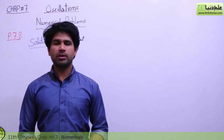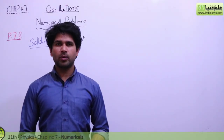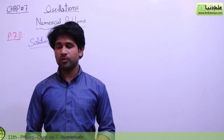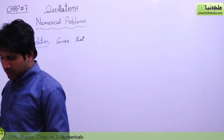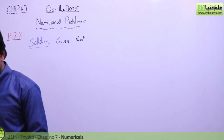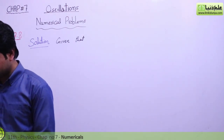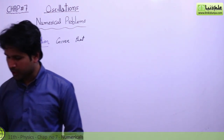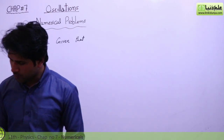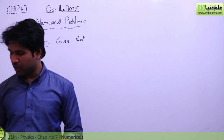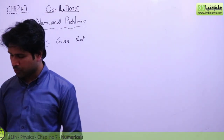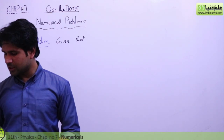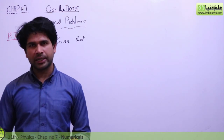Now we are going to solve numerical problem 7.8 of chapter number 7, which is the last numerical problem of the textbook. The statement is: find the amplitude, frequency, and period of an object vibrating at the end of a spring, if the equation for its position as a function of time is given as x equals 0.25 cos(π/8·t). What is the displacement of the object after 2 seconds?